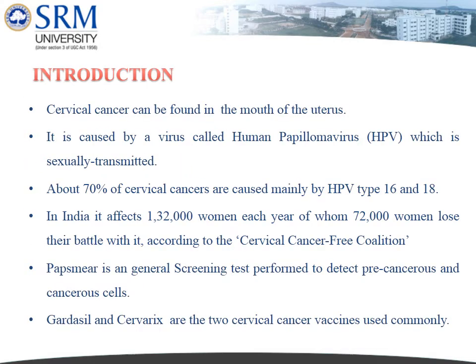Cervical cancer can be found in the mouth of the uterus. It is caused by the human papilloma virus (HPV), which is sexually transmitted. About 70% of cervical cancers are caused by HPV types 16 and 18. In India, it affects 1,32,000 women each year, of whom 72,000 women lose their battle with it. Pap smear is a general screening test performed to detect pre-cancerous and cancerous cells. Gardasil and Cervarix are the two cervical cancer vaccines available.